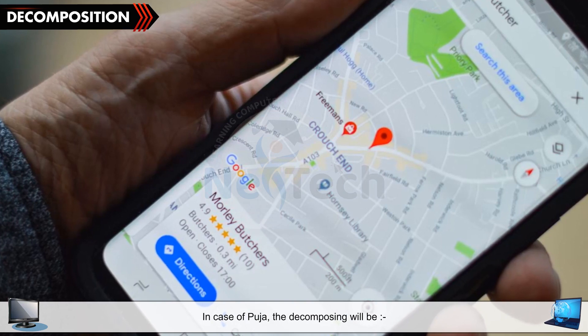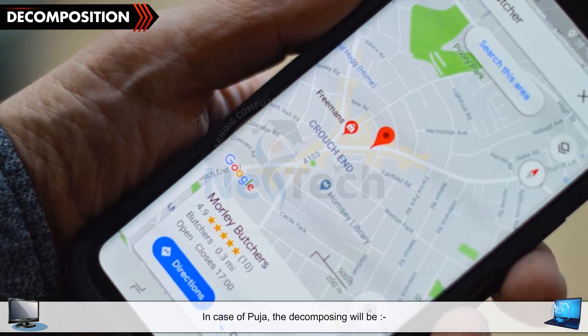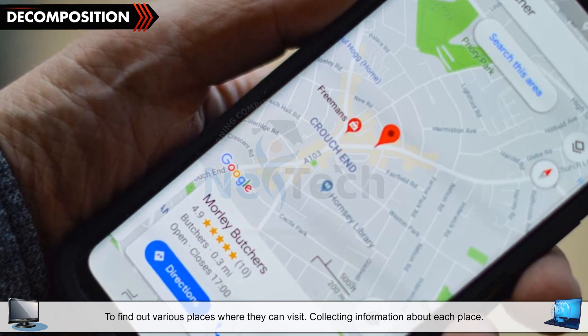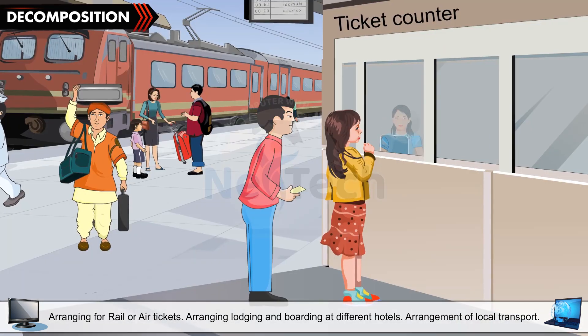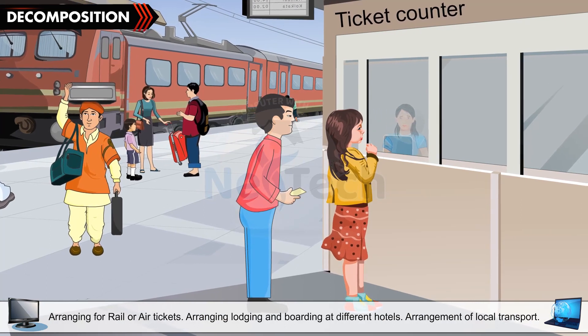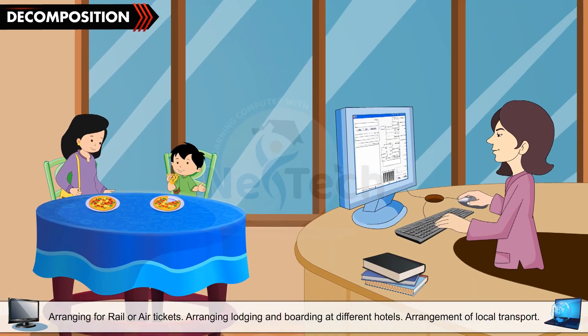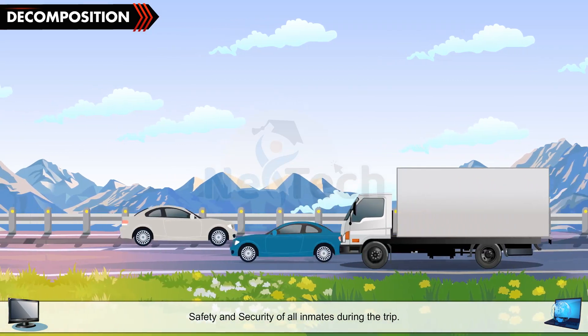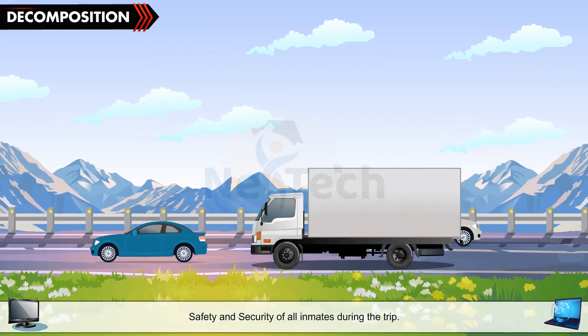In case of Pooja, the decomposing will be: To find out various places where they can visit; Collecting information about each place; Arranging for rail or air tickets; Arranging lodging and boarding at different hotels; Arrangement of local transport; Safety and security of all inmates during the trip.